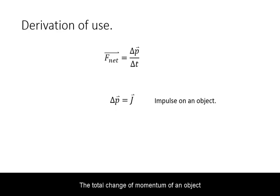The total change in momentum of an object is referred to as impulse. It is designated by capital letter J.